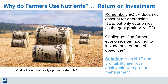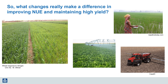Luckily the answer is usually yes when we practice good nutrient management. We can talk about theory and goals for a long time, but what practical steps can be taken to improve nitrogen use efficiency? The recommendations are very site-specific and very crop-specific, but we can identify some universal principles that can help.